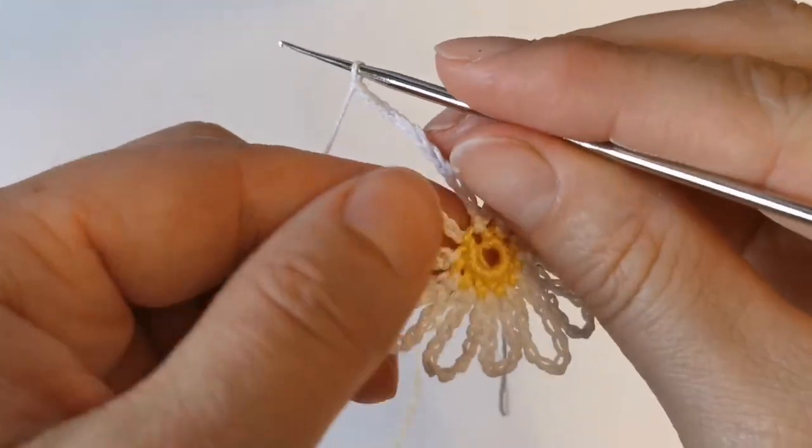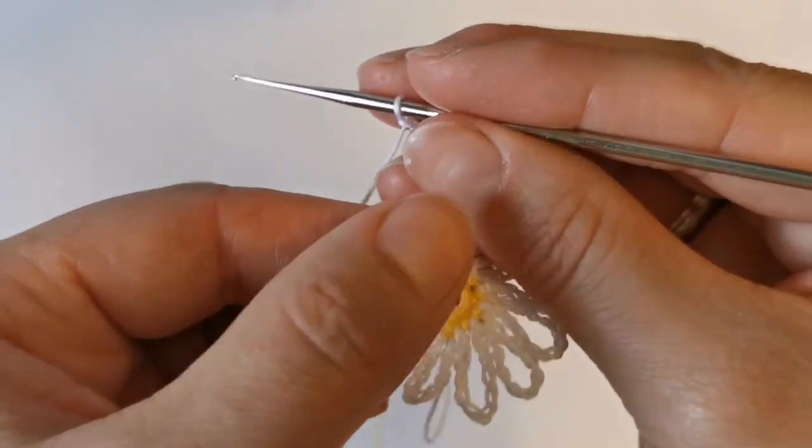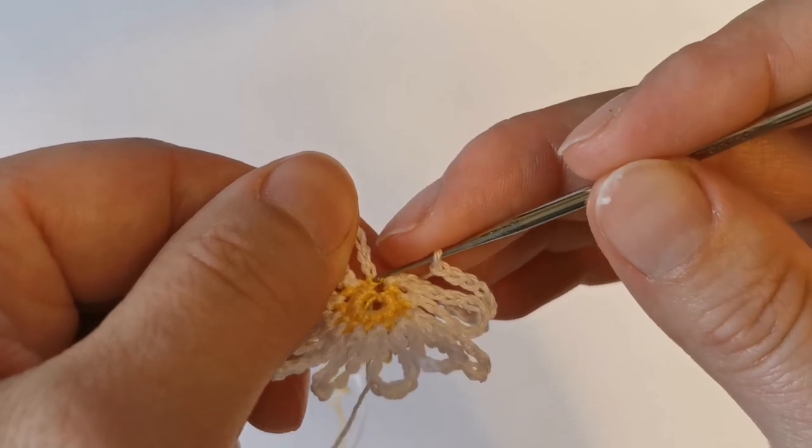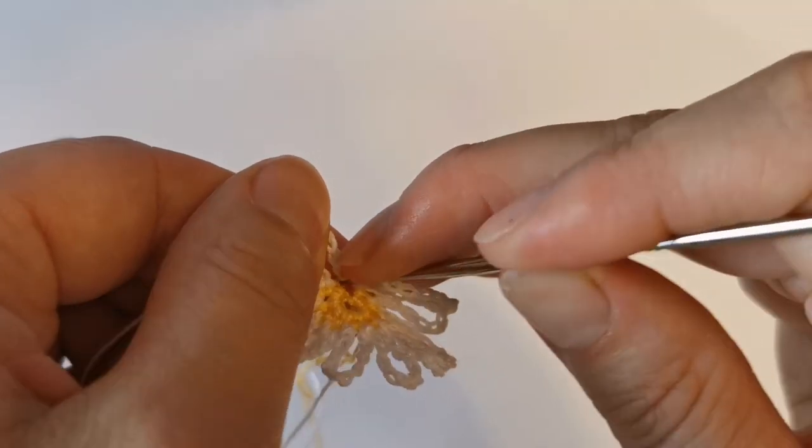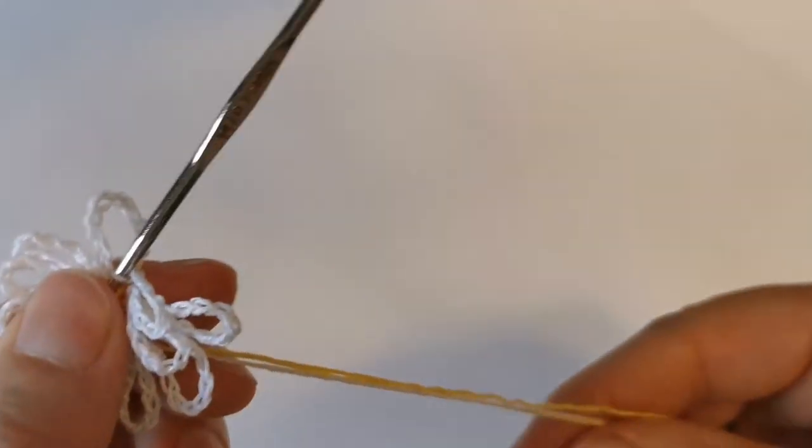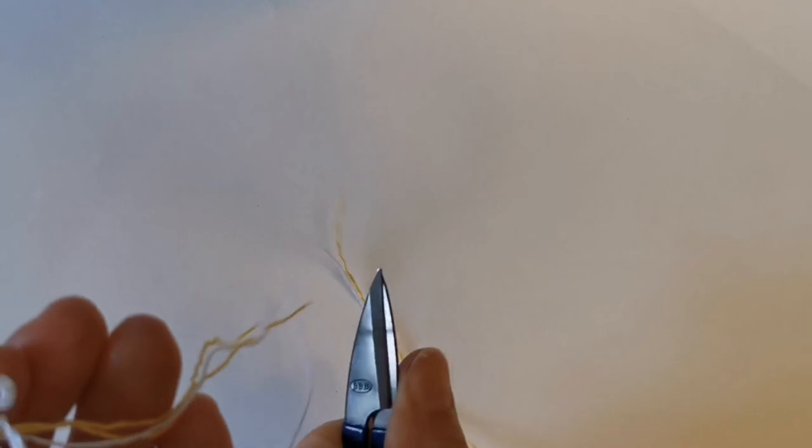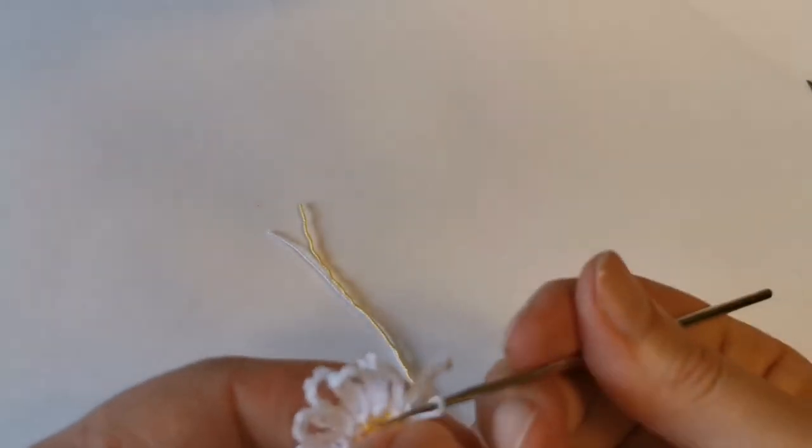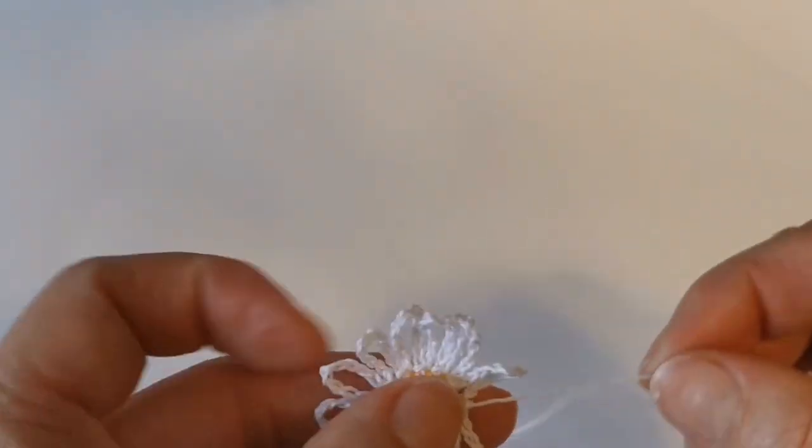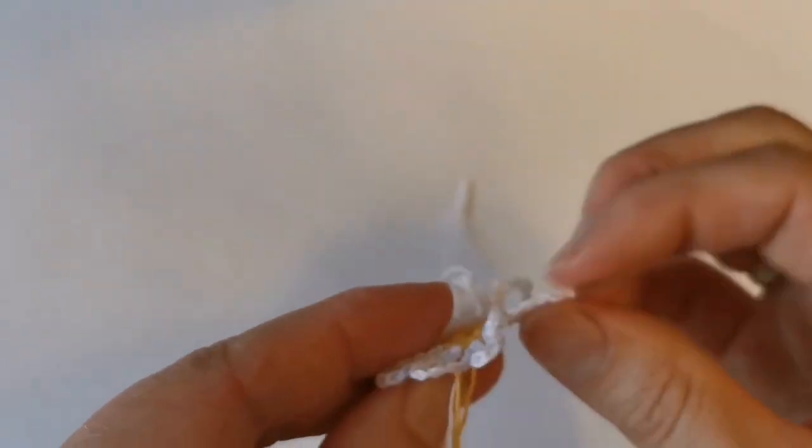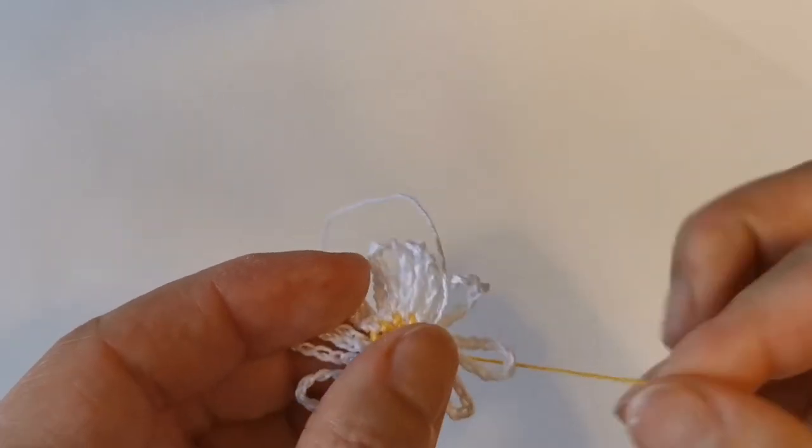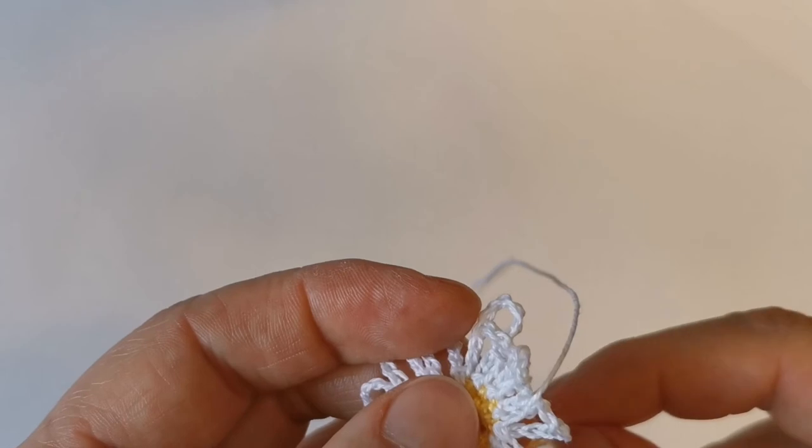I am about to finish my last petal. I made 11 chain and now make last slip stitch into the very first loop. Now we can cut yarns, pull it up. Now we can tighten our ring. Hold the core and tighten.